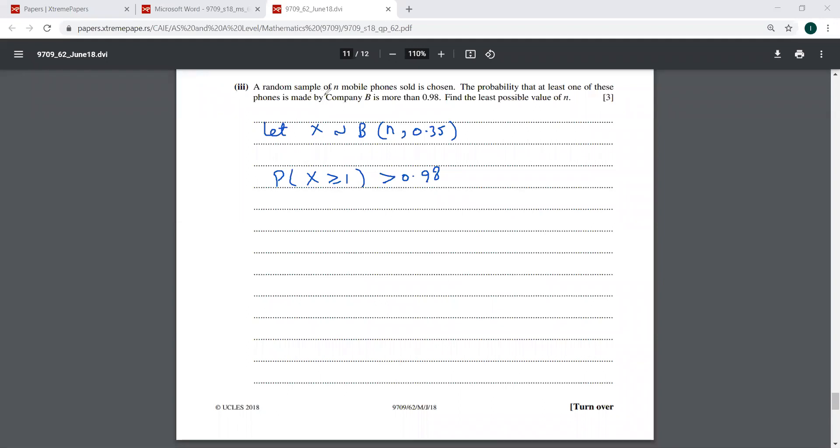A random sample of N mobile phones sold is chosen. So this N is unknown. The probability that at least one of these phones is made by company B is more than 0.98. So that is what I have written here. So this would be finding the probability of one or more. This is really impossible. We are not clear what is N.